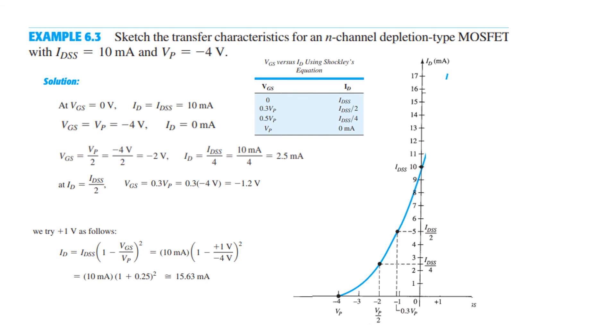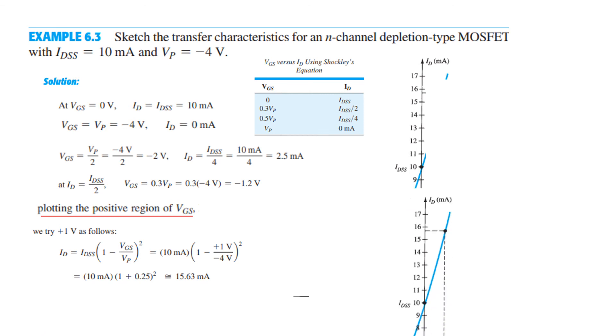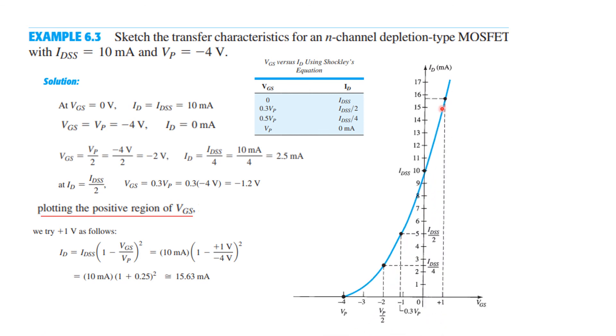So this was the IDSS, 15.63 is somewhere here. So let's plot that. And we can see this current is very very high current. So I hope this has given you an idea as to how to solve this type of a question, how to plot the transfer characteristics curve. Thank you.